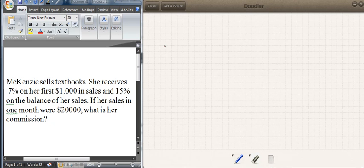She's going to receive 7%, which is 0.07 times the first $1,000, plus 15% on the balance of her sale. The balance of her sale is just $20,000 minus $1,000, which is $19,000 essentially.